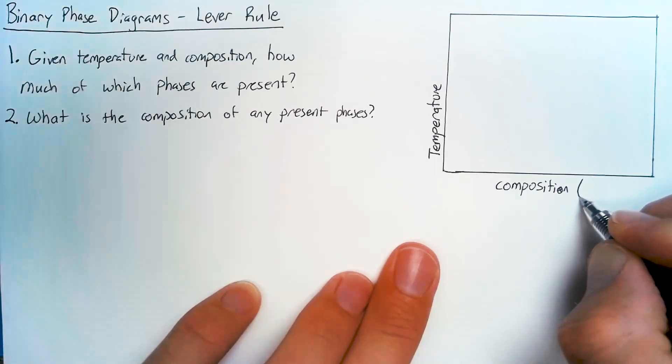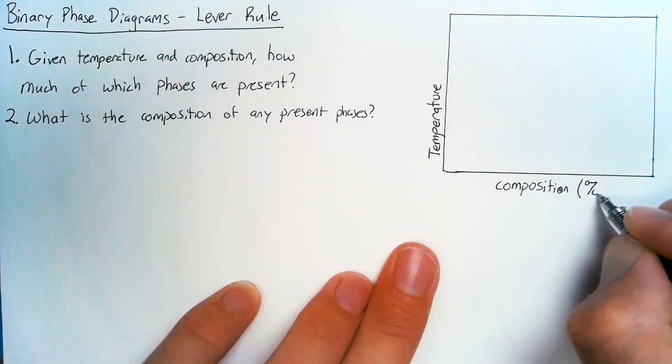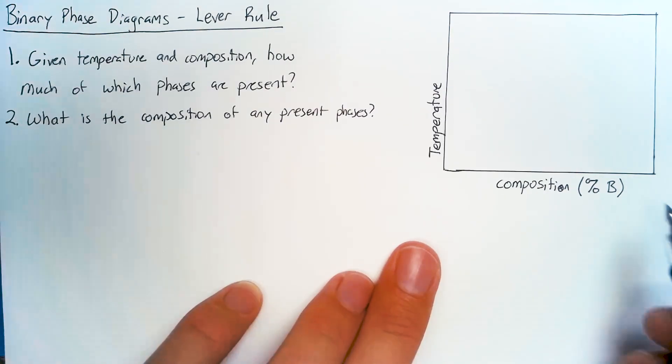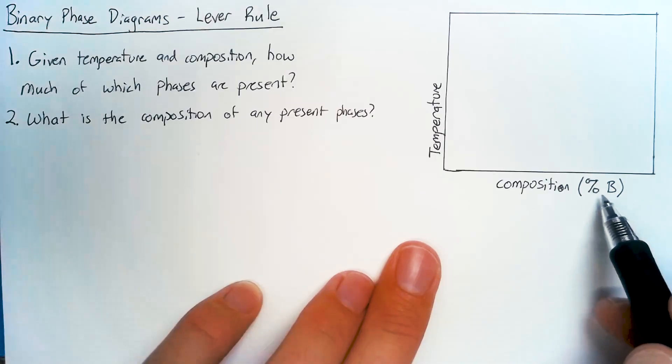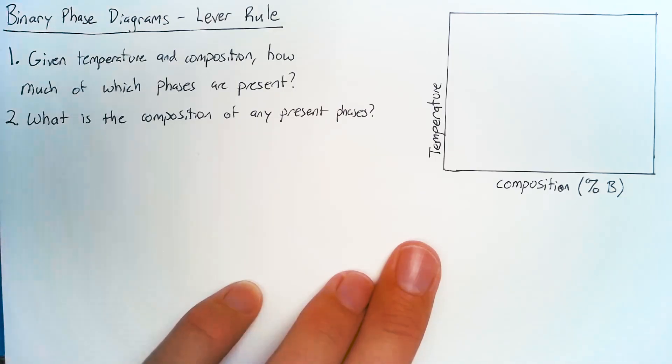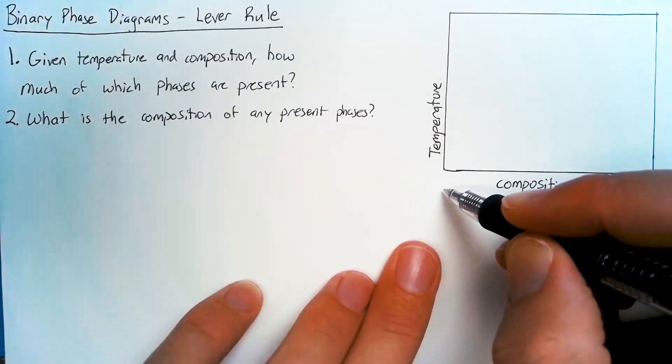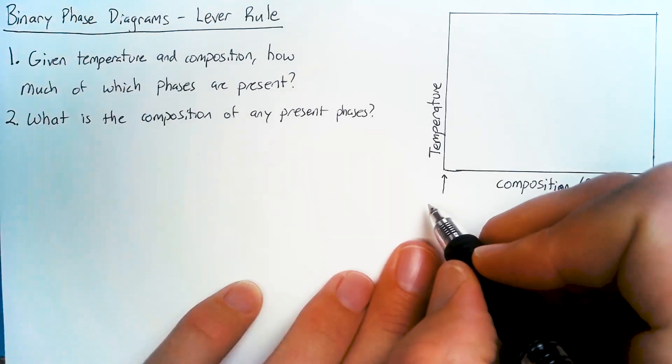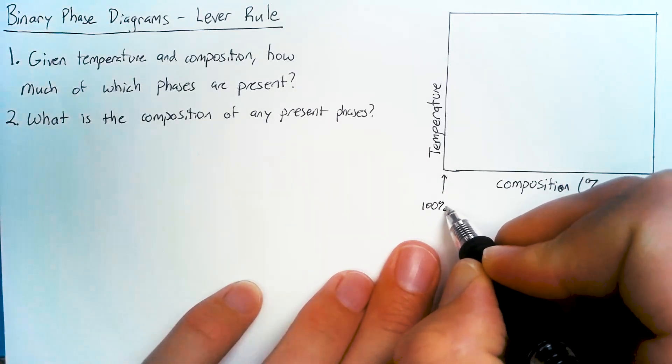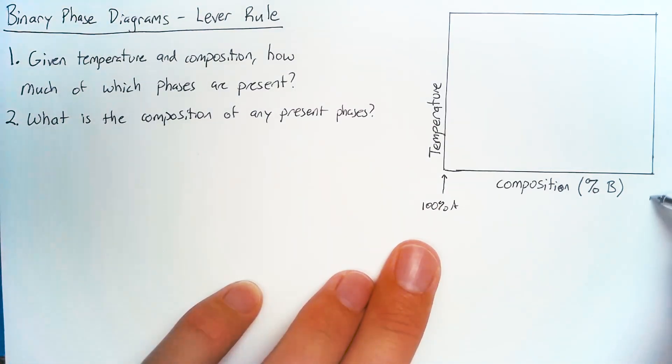And typically that number is the percentage of one of the two materials. And if we call those materials material A and material B, we can just say that this is the percentage of B. And if we do it that way, that means that the left-hand side is going to be 100% A while the right-hand side is 100% B, which feels pretty natural.